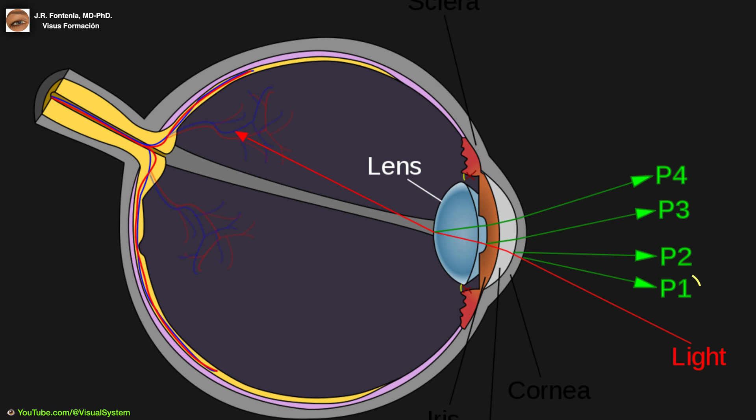The first Purkinje image, the corneal reflection, is generally known as glint and is the brightest of the four. The first and second Purkinje images are almost completely superimposed. Thus, only the first Purkinje image is typically used to detect eye fixations since it is brighter.